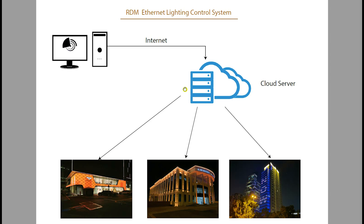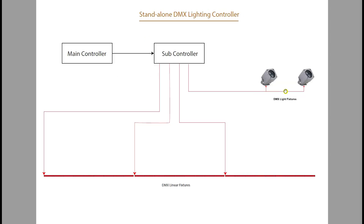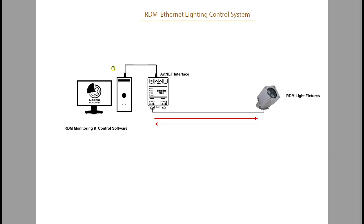You often see cloud control used for outdoor screens or projects located far from the office. The software connects to the cloud server, which then connects to each project. An internet connection is required at each project site, and a 4G connection is needed at the control computer. This system is not commonly used but is available if a client requires it. That covers all four types of DMX controllers — Art Net and RDM are similar in fixture connections, with the key difference explained in the next lecture.